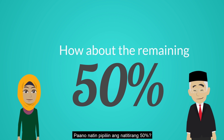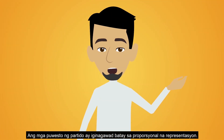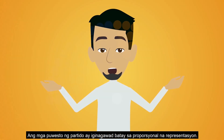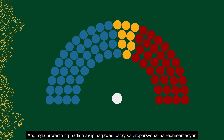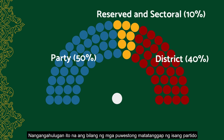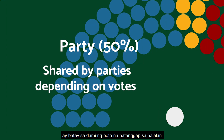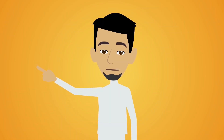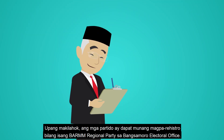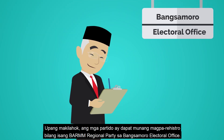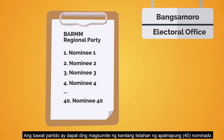How do we elect the remaining 50 percent? Party seats are awarded based on proportional representation. This means that the number of seats a party will receive will be in proportion to the percentage of votes received in the elections. To participate, parties must first register as a BARM regional party with the Bangsa Moro Electoral Office. Each party must also submit its list of 40 nominees.